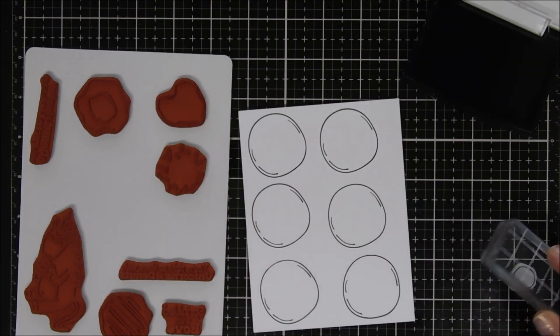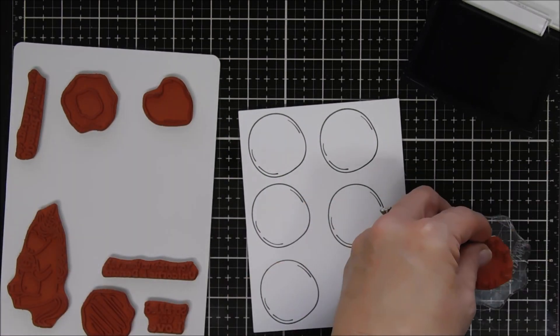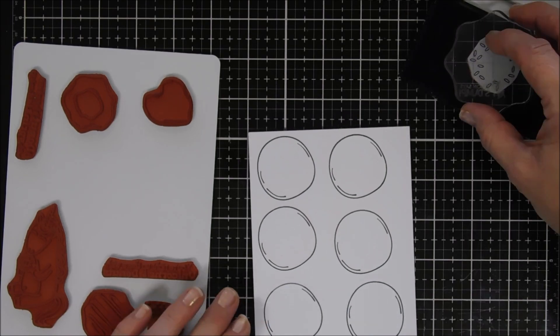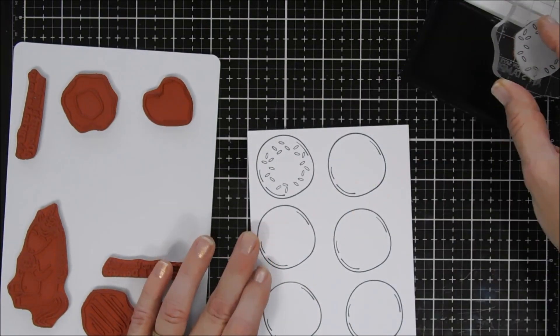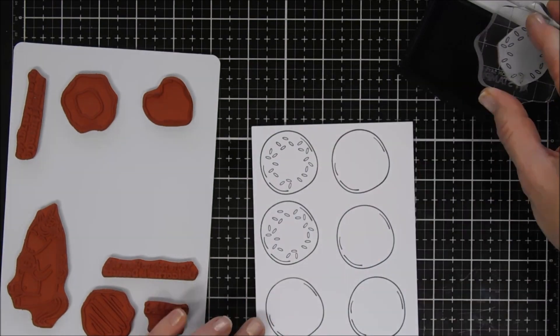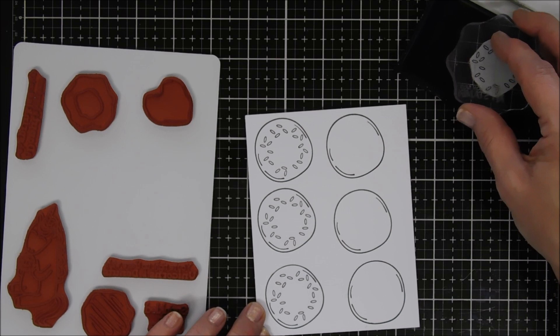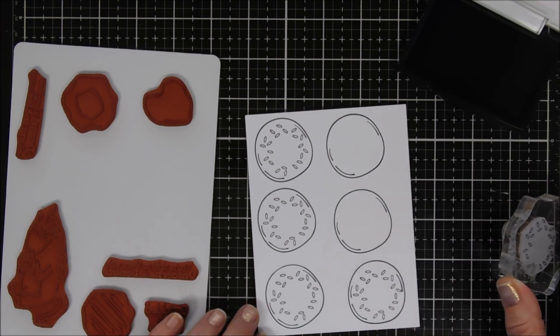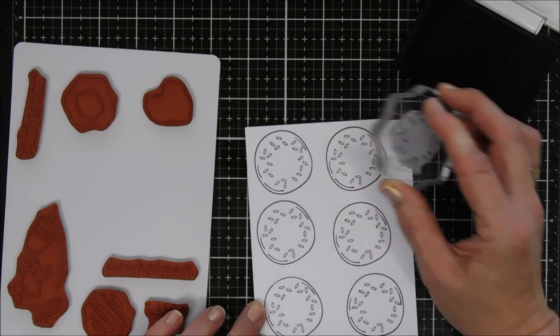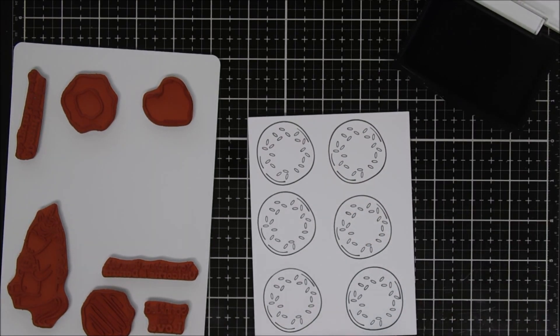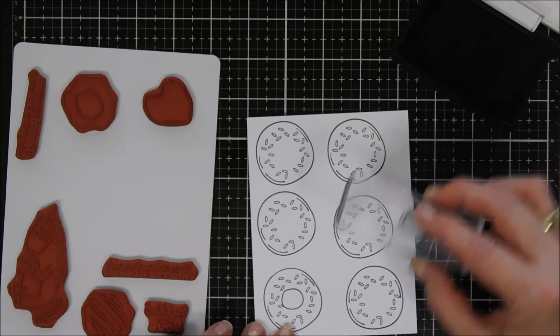The frostings are nice because there's so many options. You have that little heart frosting piece that you can set inside your little donut. There's swirls and a little donut frosting ring, super fun. But I just chose the sprinkles. The sprinkles are nice because you can color them in and I stamped them on all six of my donuts.